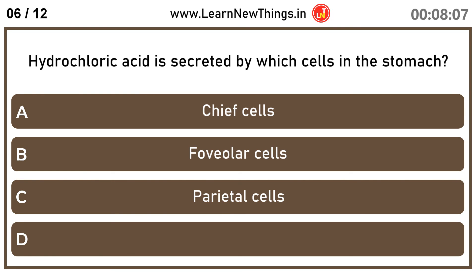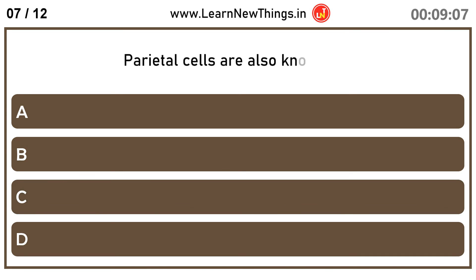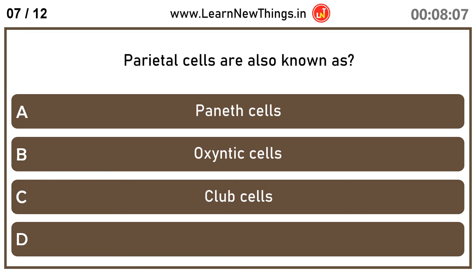Hydrochloric acid is secreted by which cells in the stomach? Parietal cells. Parietal cells are also known as? Oxyntic cells.